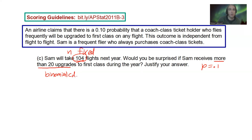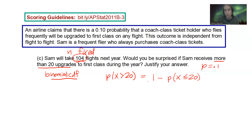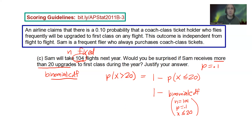It says more than 20 upgrades, so it's going to be a range of values — binomial CDF. We want P(X > 20). CDF in your calculator goes at that point and below, so you have to use the complement: 1 minus P(X ≤ 20). It would be very inefficient to calculate binomial PDF for 21, 22, 23, and so on individually when you can do CDF. Write: 1 minus binomCDF with N = 104, P = 0.1, X ≤ 20. Always define your parameters.